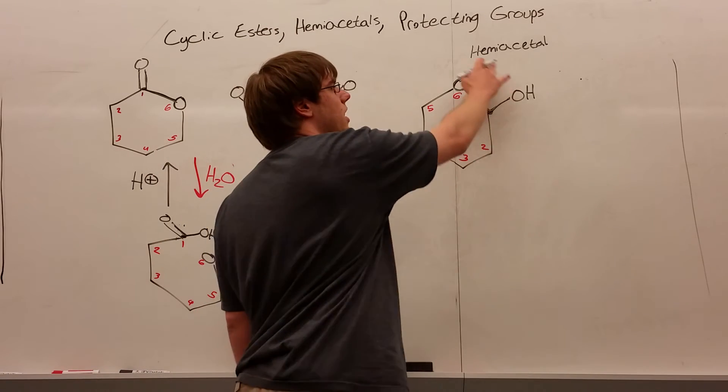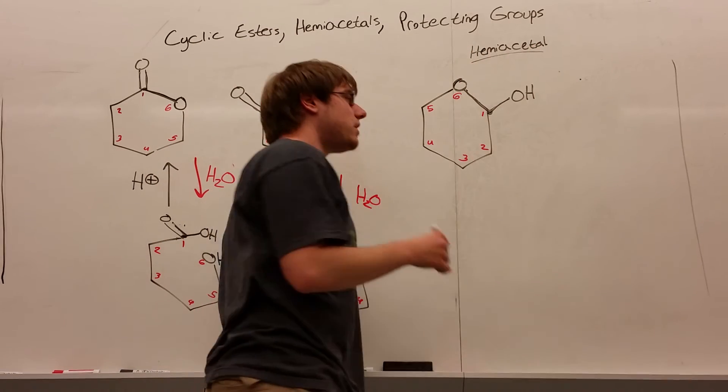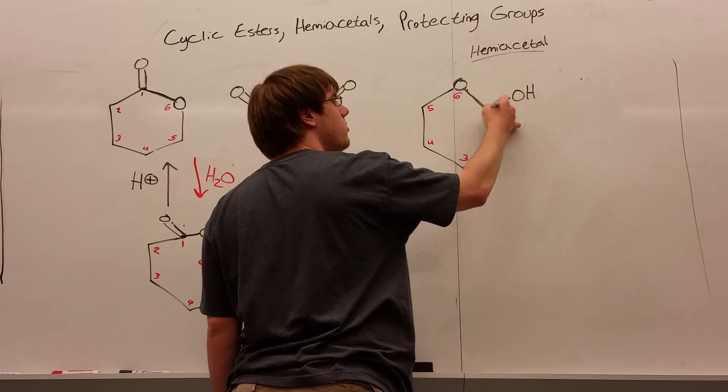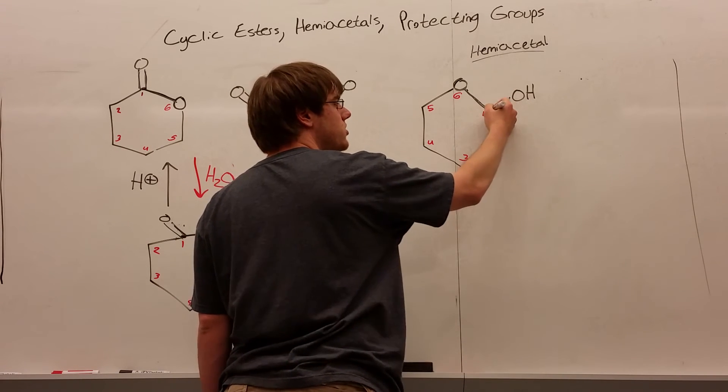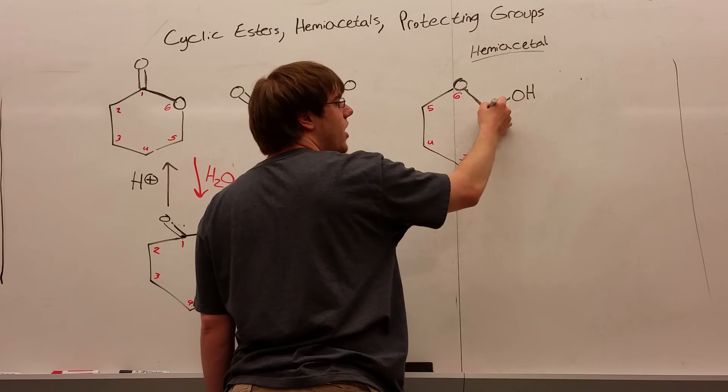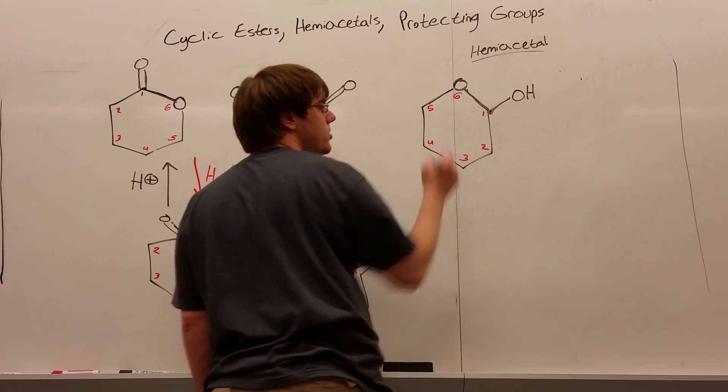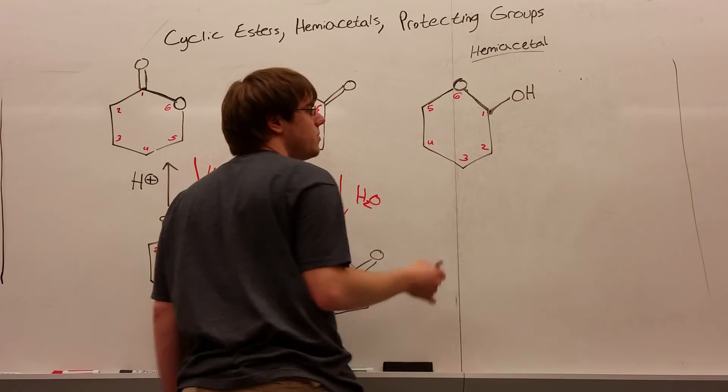Now this right here is what we call a hemiacetal. Hemiacetals, you know, you can always recognize them because on one carbon there are two oxygens. One of those oxygens is an OH, and the other oxygen is an oxygen without a hydrogen. It's an oxygen with a carbon, or a carbon chain, so an OR group. So that's our hemiacetal.